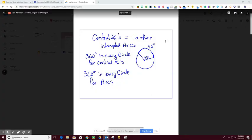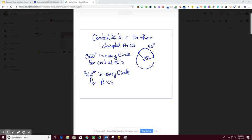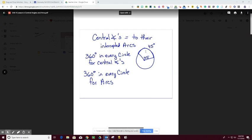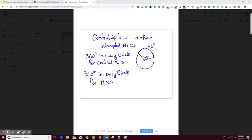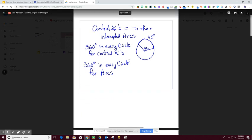Today our lesson is about central angles and their intercepted arcs. Central angles are equal to their intercepted arcs. All the central angles in a circle equal 360 degrees, and likewise all the arcs in a circle equal 360 degrees. So if this central angle is 45 degrees, the arc is also 45 degrees. Remember that an arc is the unbroken part of a circle, the edge of the circle.